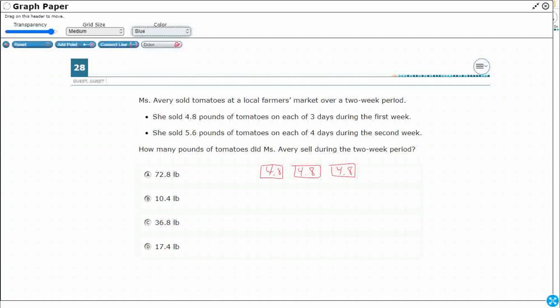And then the second week, I've got four days. So let me just put four boxes, and each of these are going to be 5.6. So there's my really rough picture.